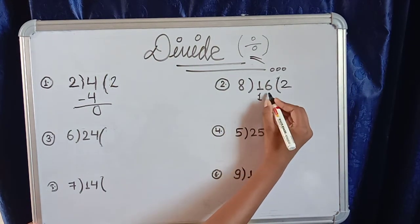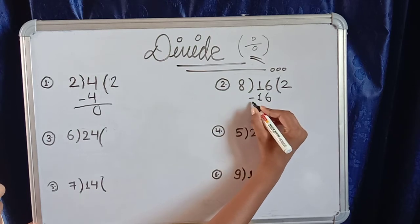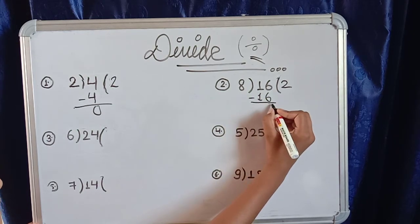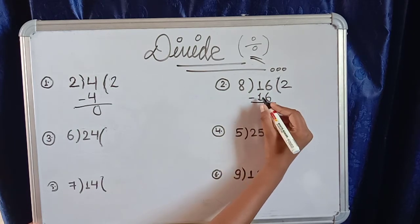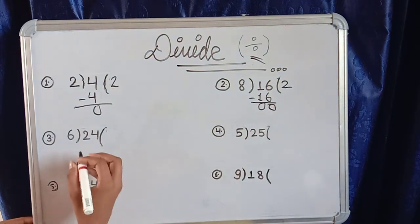We write 16 and then minus: 6 minus 6 is zero, 1 minus 1 is zero. Now let's go to question number three.